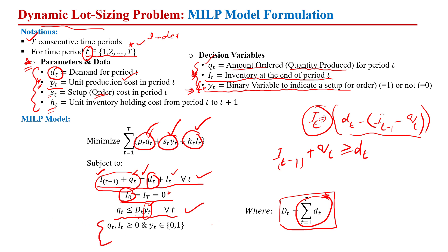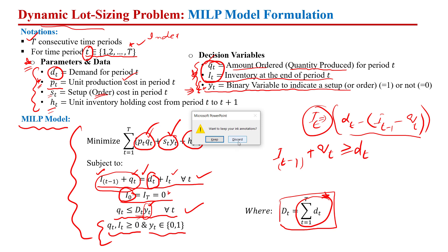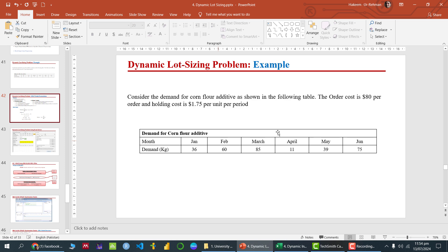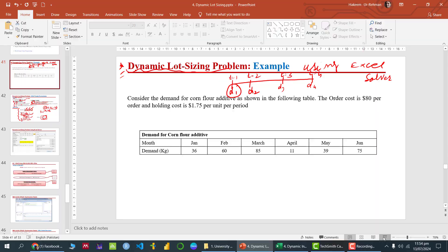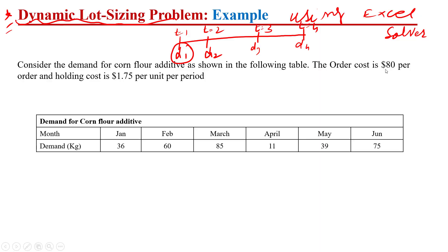The decision variables q_t and I_t are non-negative continuous variables, while y_t is binary. Because we have a mix of variable types, this is a Mixed Integer Linear Programming (MILP) model. Now, to solve this with Excel Solver, I am using an example where the order cost per time period is $80 and the unit holding cost is $1.75. No unit production cost is given, so it is excluded from the model.